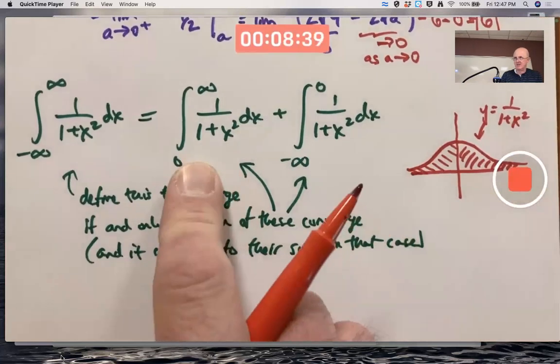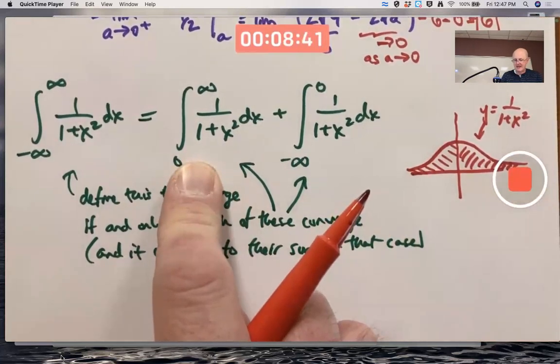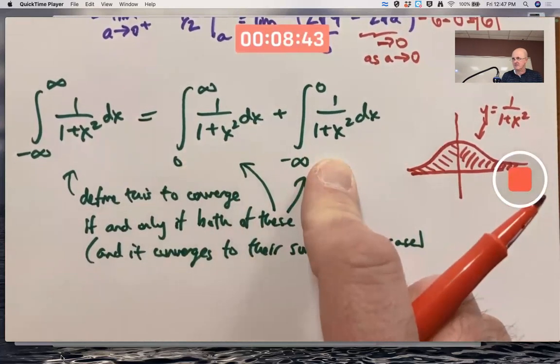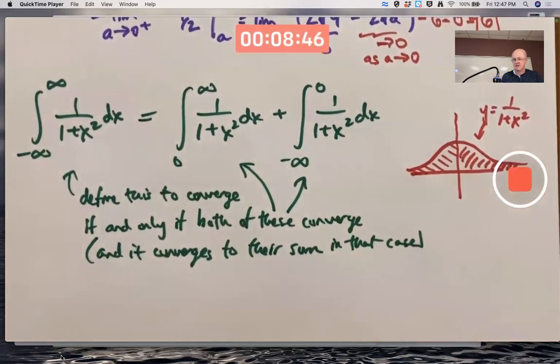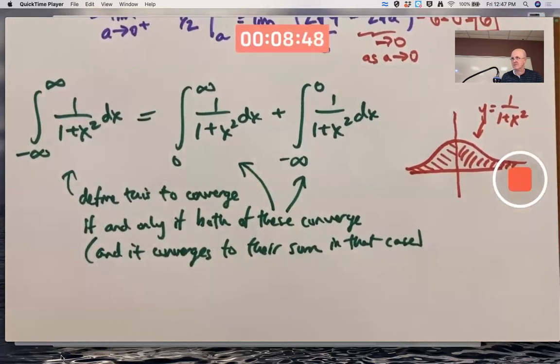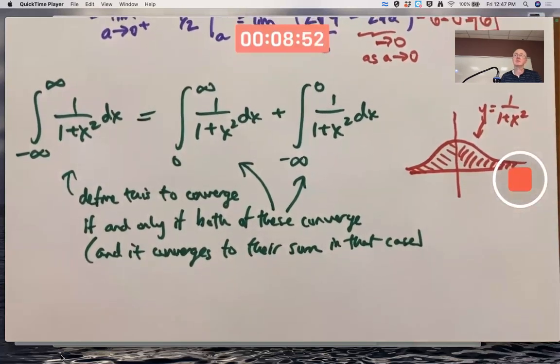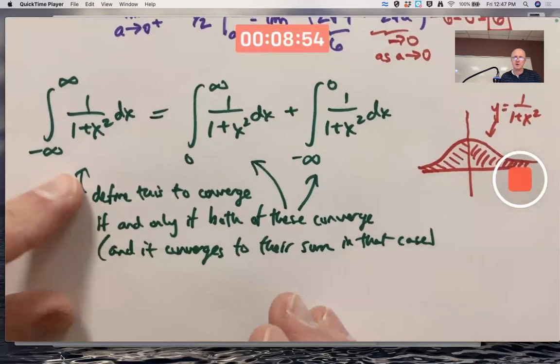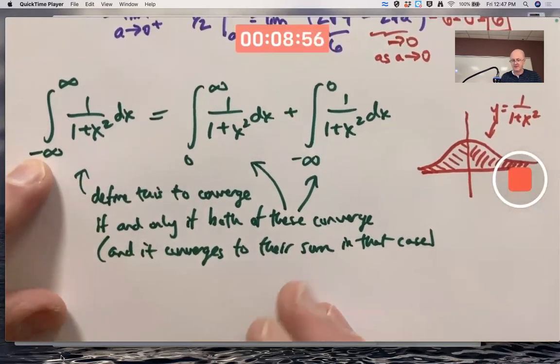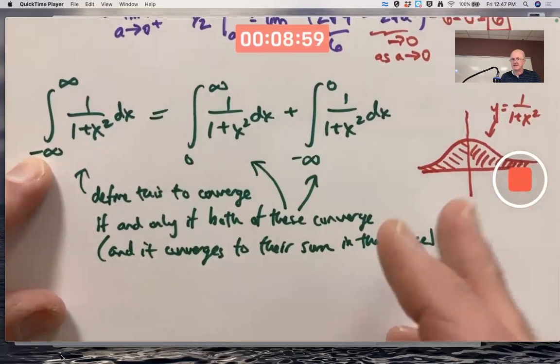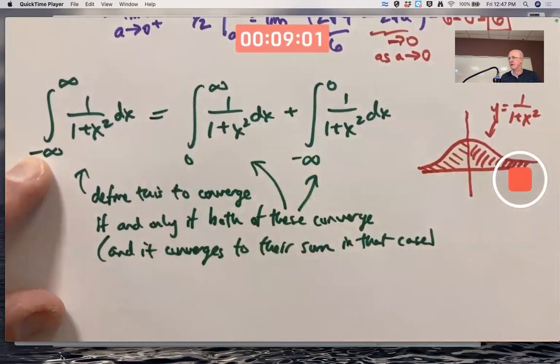I'll just think about this one and hint at how to think about this one. But to fully justify this, you really do need to think about both and show they both converge. If even one of them diverges, then the entire improper integral over here diverges. But again, because of symmetry, if one of these converges, so will the other one.